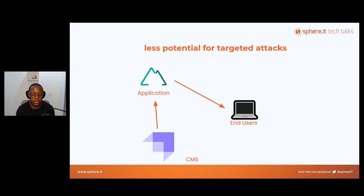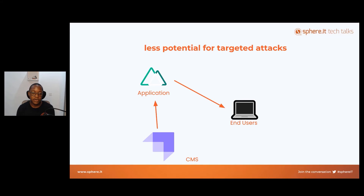You also have a secure content solution. A big problem with traditional CMSs was that they were vulnerable to a lot of security threats. When you go headless and decouple the CMS from the front-end application, there are more entities to attack, which increases the complexity of such attacks and makes it much harder to crack your system with a targeted attack. Because of this, a lot of people are moving to headless as it's a much more secure architecture.